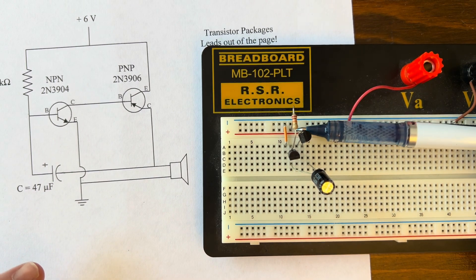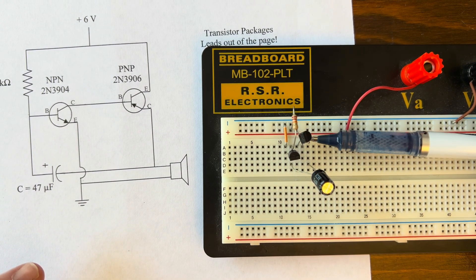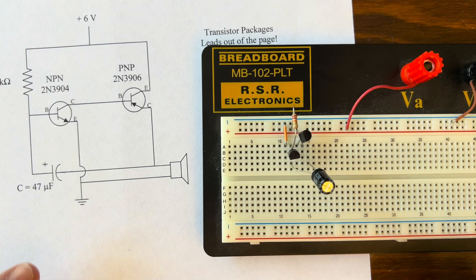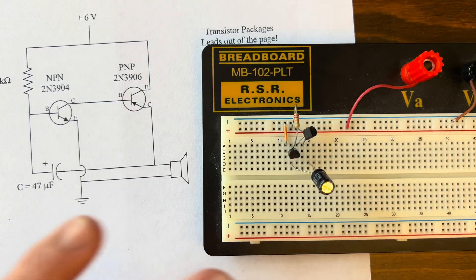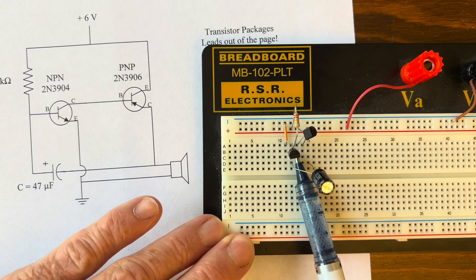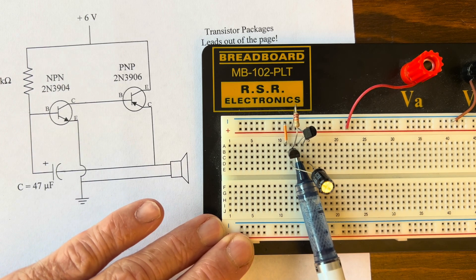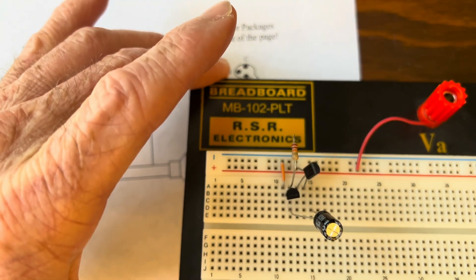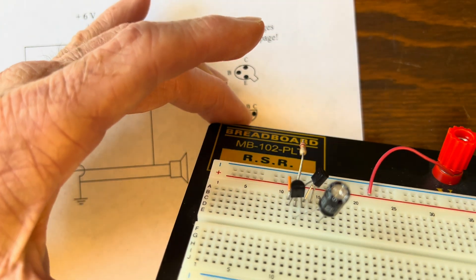So look, my emitter is at the positive. My base of this new transistor, maybe I can bend it down for a second, right in there is going to the collector of my first transistor. Hopefully the camera can pick that up. All right.